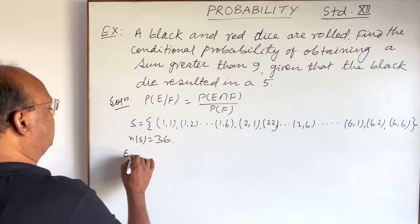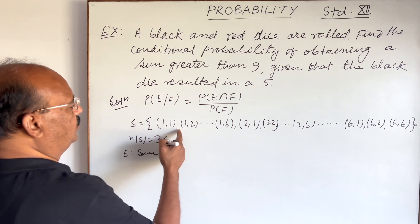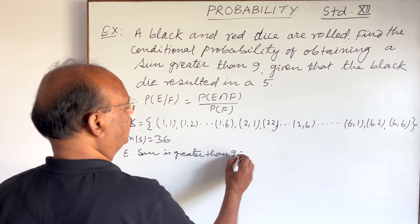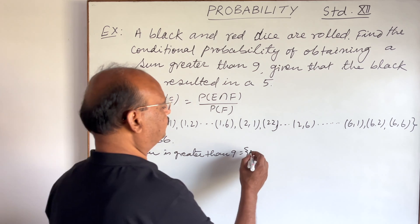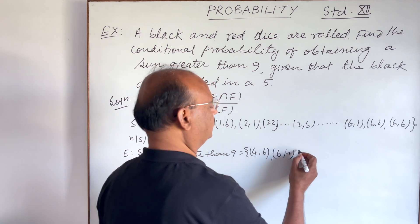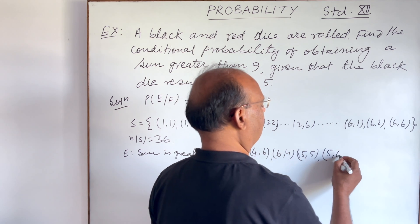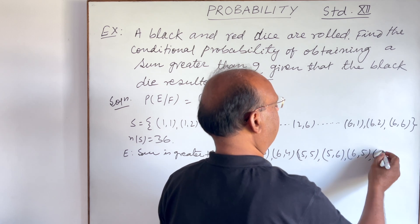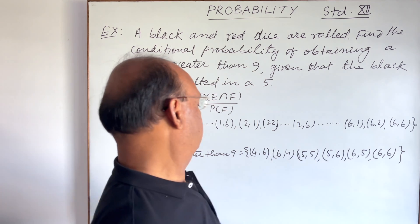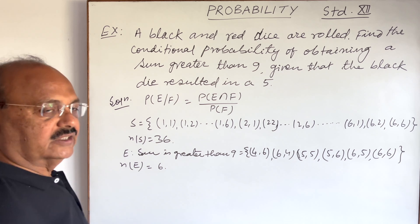Now two events are defined. Let event E be: the sum of the two dice is greater than 9. The elements of E are: (4,6), (5,5), (5,6), (6,4), (6,5), and (6,6). So the number of elements in event E, n(E), is equal to 6.